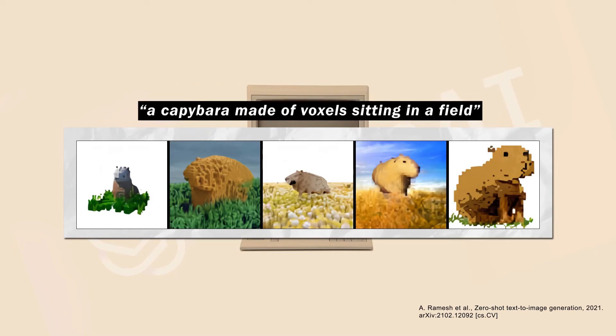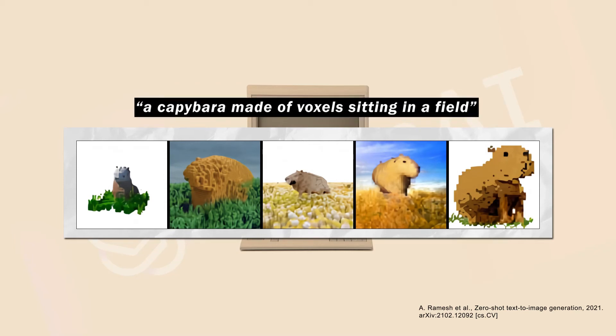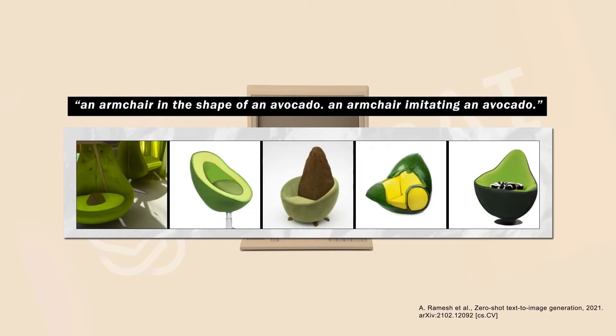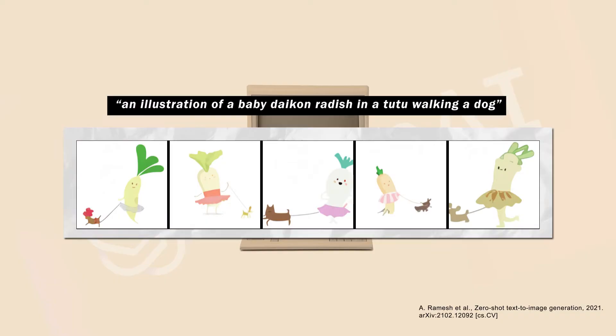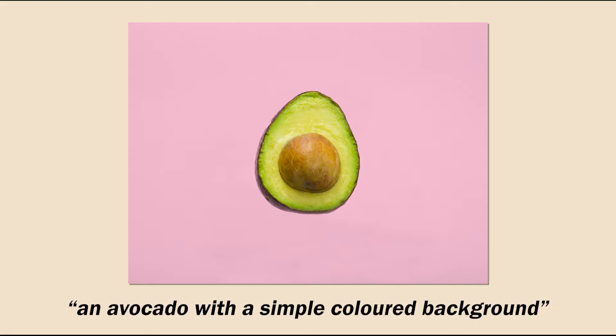Multimodal AI models like DALL-E can generate images for you just with text. But say you like the image so far, but want to change it in a really specific way. How do you do this?